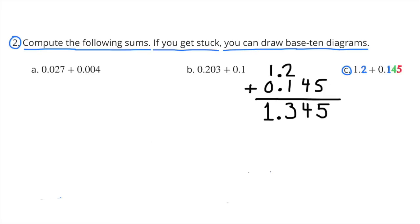Part C: 1.2 plus 0.145. I decided not to draw diagrams this time, but to line up the decimals and add them vertically. First I brought the 5 down in the thousandths place. Then I brought the 4 down in the hundredths place. I add 2 tenths plus 1 tenth and I get 3 tenths. I bring down the decimal. 1 plus 0 equals 1. So 1.2 plus 0.145 equals 1.345.